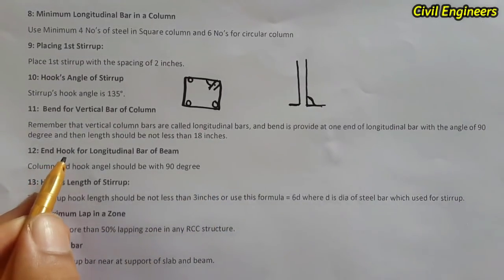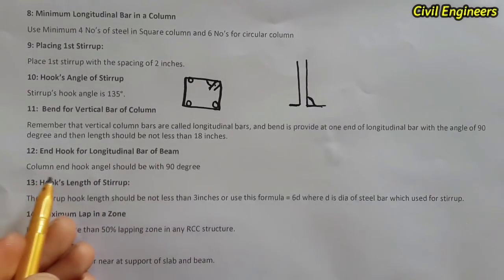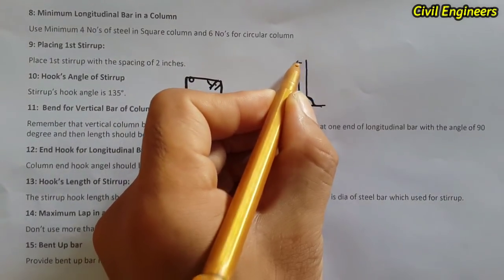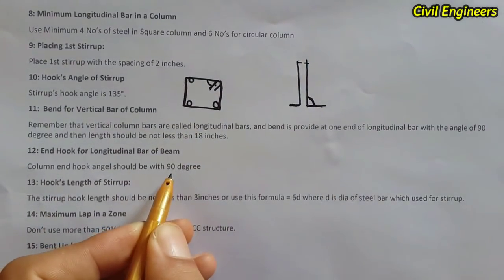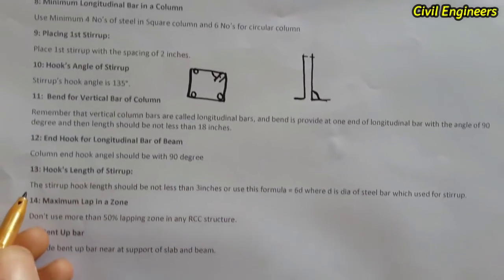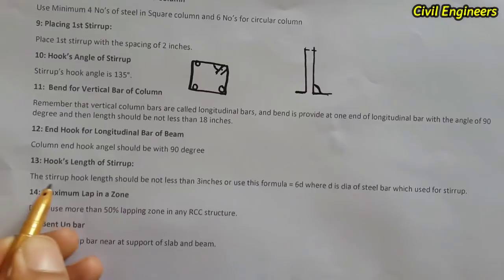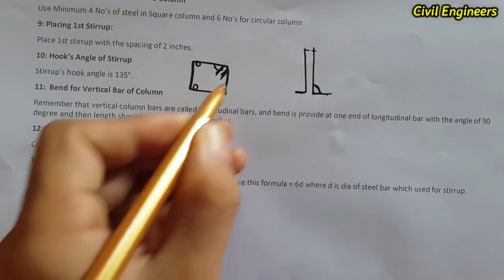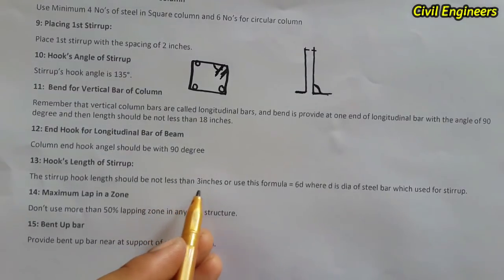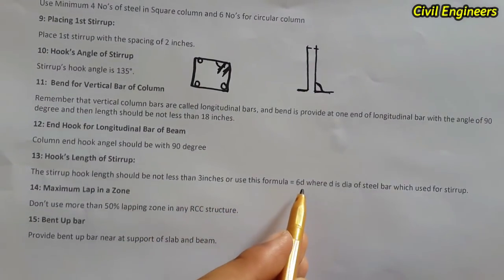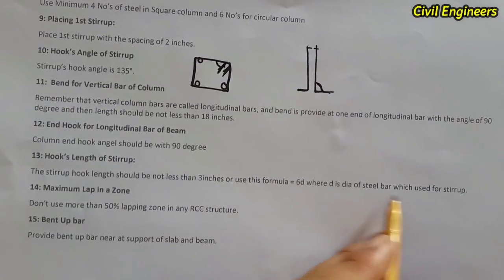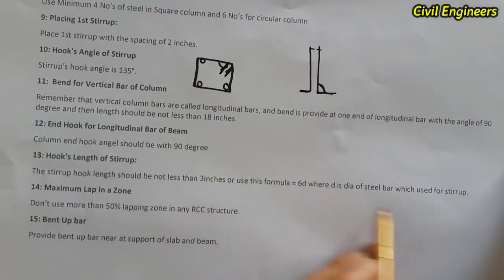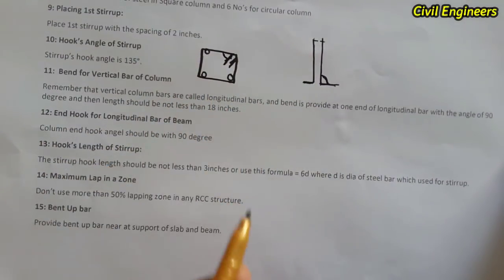The twelfth term is the hook for longitudinal bars of a beam: the hook angle should be 90 degrees, and the bar is bent at the end. The thirteenth term is the hook length of stirrups: the hook length should not be less than 3 inches, or use the formula 6d, where d is the diameter of the stirrup bar.